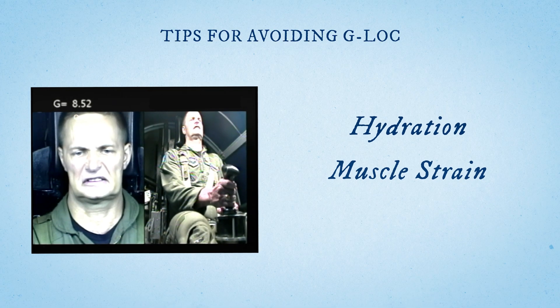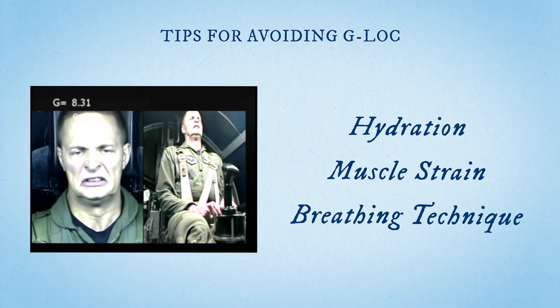A lot of people think that a G-suit is kind of an end-all be-all to solving G-lock problems — the fact is that it's absolutely not. A traditional G-suit will help your resting G-tolerance by about half a G to one G. So if you were going to pass out at seven Gs, now you have up to seven and a half or eight Gs before you pass out. With the new A-tags suits, that can go up to one and a half to two Gs of additional protection. But if your resting G-tolerance is three or four Gs and you're relying exclusively on your G-suit to keep you awake, you're not going to stay awake very long. You need to stay hydrated, have good muscle strain, and use a good breathing technique in order to keep yourself awake.